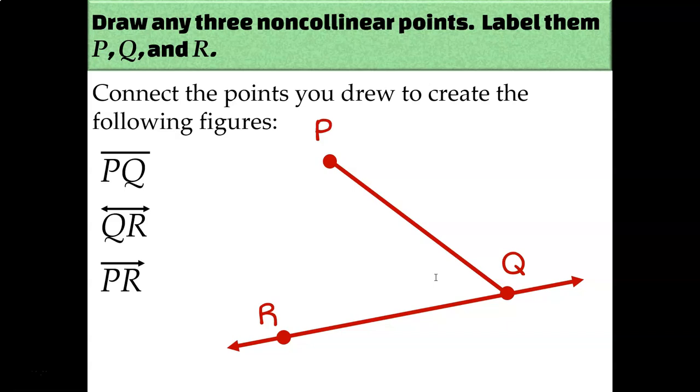Remember that to name a ray, the endpoint has to be written first, and then any other point on the ray gets written second. So P is where the ray is going to begin, and then it's going to continue through and beyond point R, like so. And now you know everything you need to know about the intersection of lines, rays, segments, and planes.